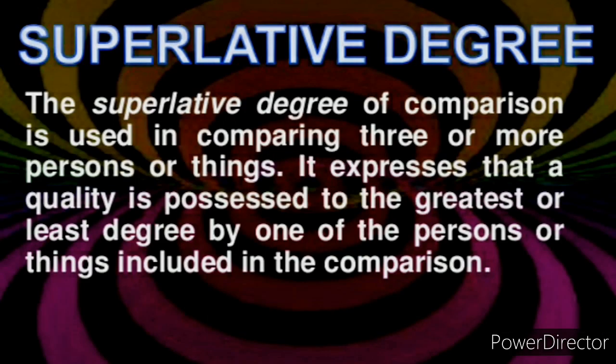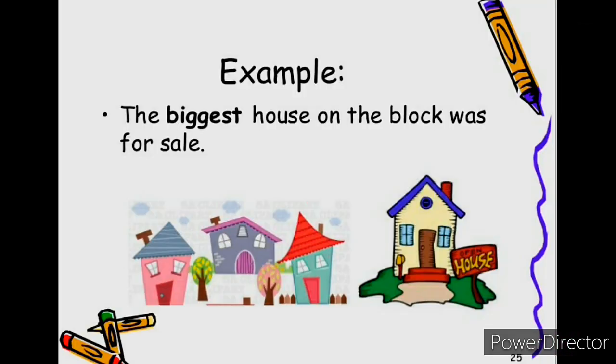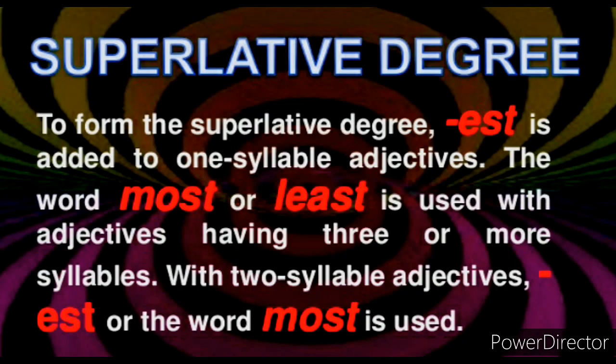Superlative degree: the superlative degree of comparison is used in comparing three or more persons or things. For example, the biggest house on the block was for sale — here biggest is the superlative degree. Now, formation of superlative degree: to form the superlative degree, -est, or most, or least is added with adjectives.